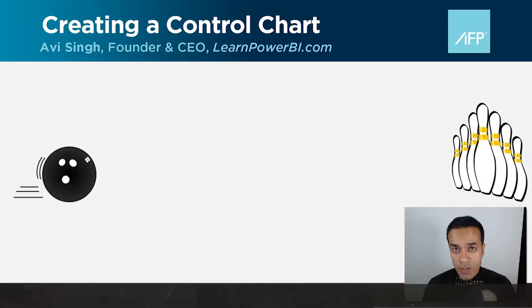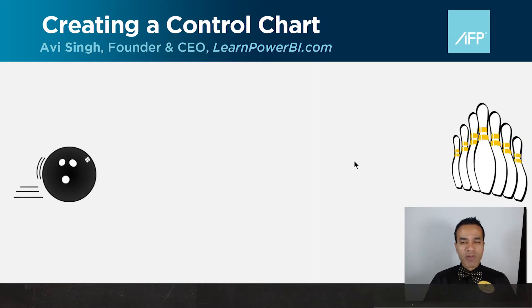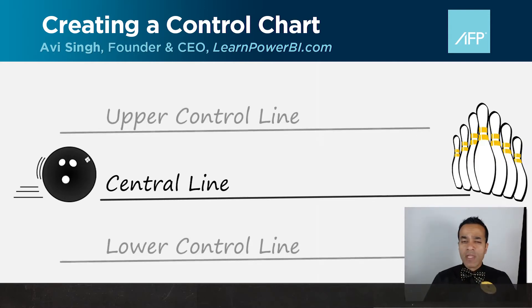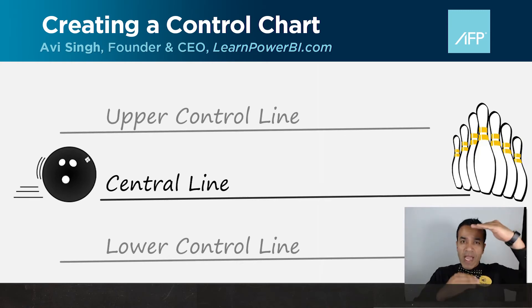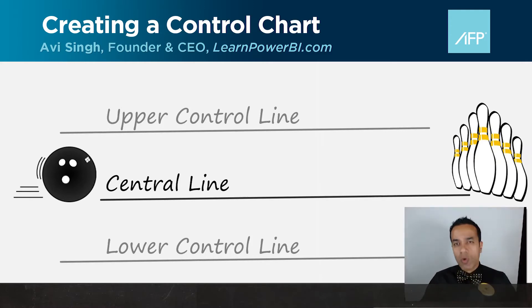Whenever I think of control charts, I think of bowling. I grew up in India playing cricket, so bowling had a totally different meaning there. Here in the bowling lanes, I'm actually not that good. All I try to do is mark that central line and try to bowl right down the middle. I do have the gutters on both sides — let's call them the control lines or control limits. I'm trying to bowl as close to the central line as I can and stay within the upper and lower control lines.